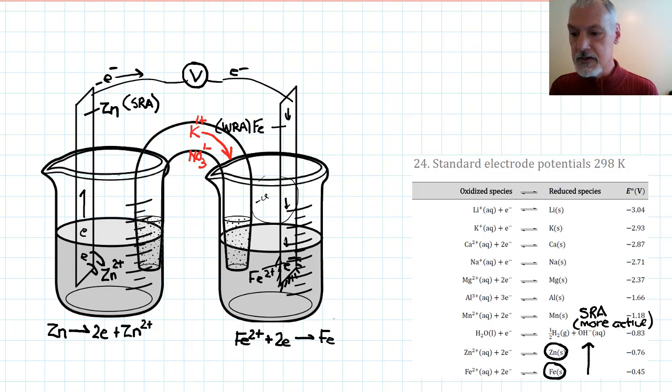Similarly, as electrons leave here, this beaker over here would develop a positive charge, and that will then draw the anion over in this direction. So the purpose of the salt bridge is to help maintain some sort of electrical neutrality in our two beakers.